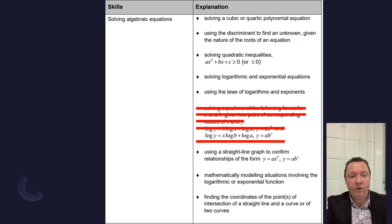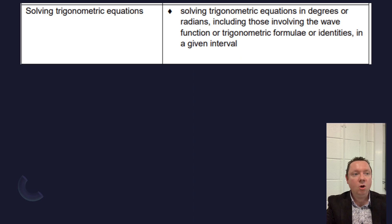And finding the points of intersection, well, you'd have to do it between a straight line and a curve, but between two curves, a little bit harder skill, that is gone. Solving trigonometric equations, that's still in. Not an issue there. So you'll have to use the wave function, trigonometric formula, all the identities over a given interval.